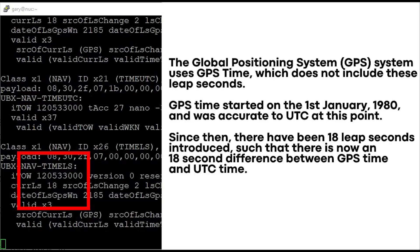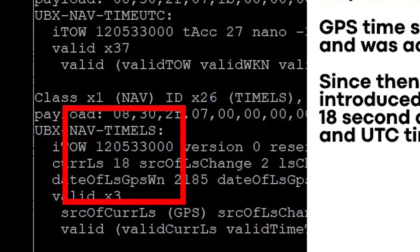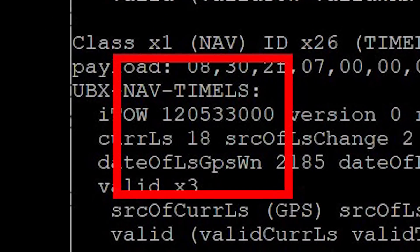We can also see that this time is according to the Naval Observatory. The other message that comes out of the GPS board is the leap seconds. The GPS system uses GPS time, which doesn't include leap seconds. GPS time started on the 1st of January 1980 and was synced to UTC at that point. However, since then there have been 18 leap seconds introduced, and there is another message that tells you the difference between UTC time and GPS time — and as you can see there, it tells us 18 seconds should be added on.